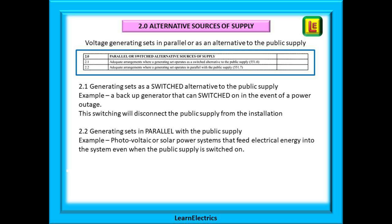Section 2 is about voltage generating sets that are in parallel to, or as an alternative to, the public supply. Item 2.1 is for generating sets that are a switched alternative to the public supply — we cannot have both on at the same time. An example would be a backup generator that can be switched on in the event of a power outage. Item 2.2 is for generating sets that are in parallel with the public supply — for example, photovoltaic cells or solar power systems that feed electrical energy into the system even when the public supply is switched on.